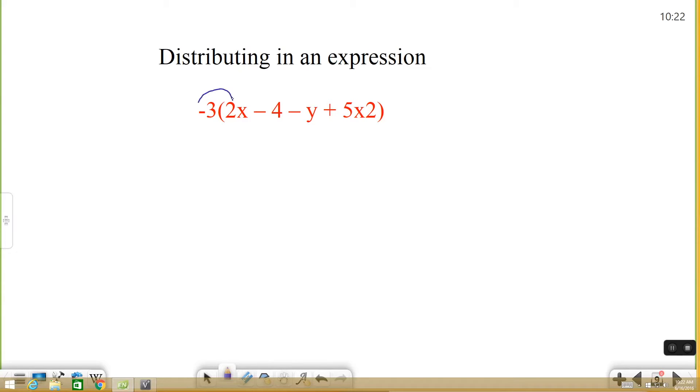All right so negative 3, you have a negative 3 times a positive 2. Negative times a positive is a negative 6x and you have a negative 3 times a negative 4. Negative times a negative is a positive 12. Negative 3 times negative y. Again a negative times a negative is a positive 3y. And then lastly a negative times a positive is a negative 15x squared.